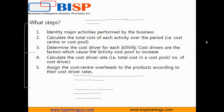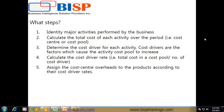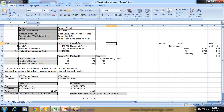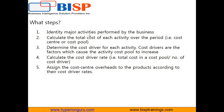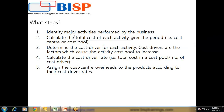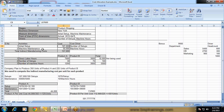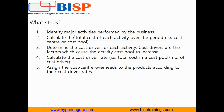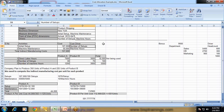When planning to design an HPCM application, make sure you gather all required information. First, identify the major activities performed by the business — in our case manufacturing, and possibly services. Second, calculate the total cost of each activity over the period — in our example we took total cost for initial setup and total cost for machine maintenance. Next, determine the cost driver for each activity — in our example the cost driver for initial setup is number of setups, and for machine maintenance it is machine hours.